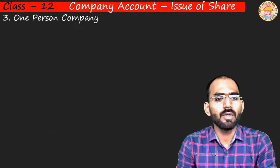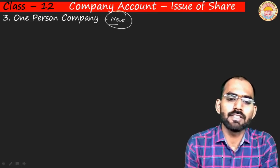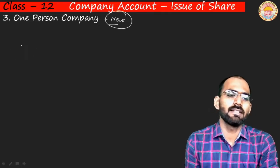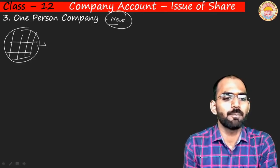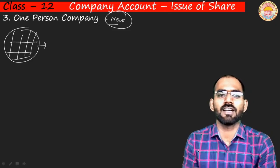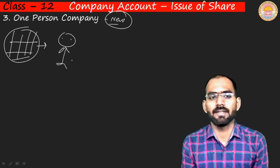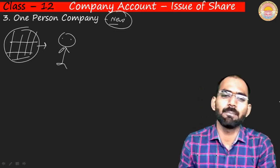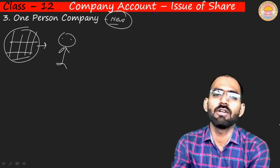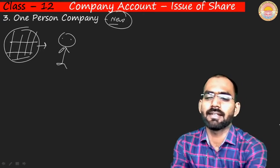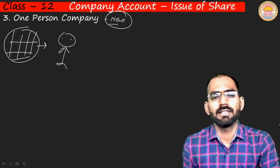Now we talk about one person company (OPC). This is a new concept introduced recently. The need arose because some individuals have a lot of money and do not want to share their company with anyone — they want to be a 'one man army.' For such cases, the Companies Act introduced the one person company rule — a company where there is only one owner.